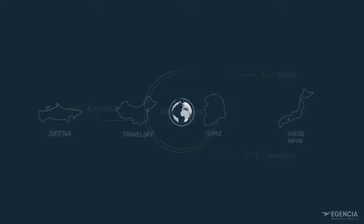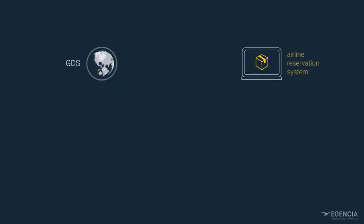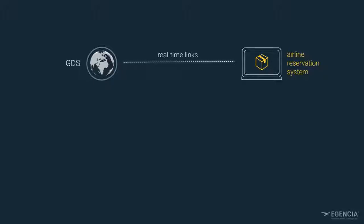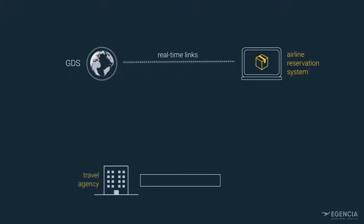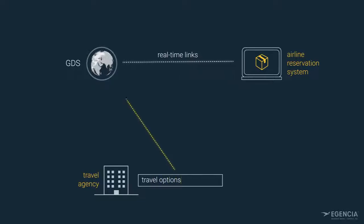A GDS holds no inventory itself. The inventory is held on the airline reservation system. A GDS will have real-time links to the airline IT systems. When a travel agency is searching for travel options, the GDS manages the requests to all relevant airlines.